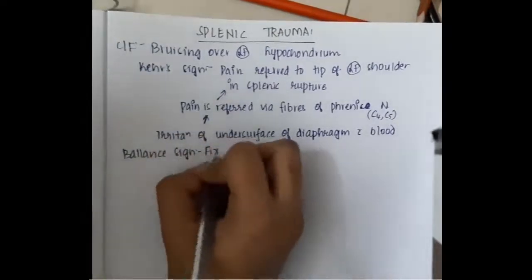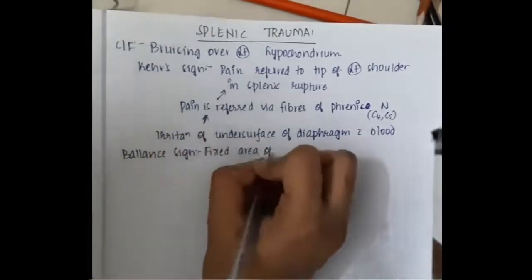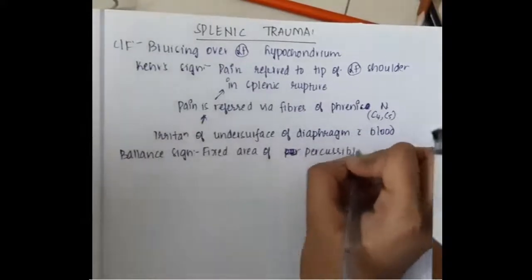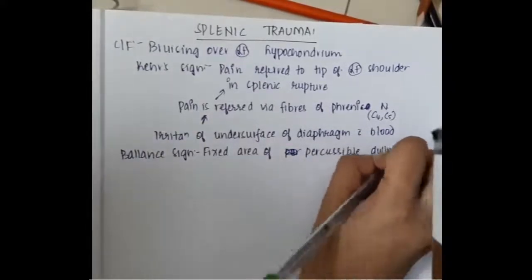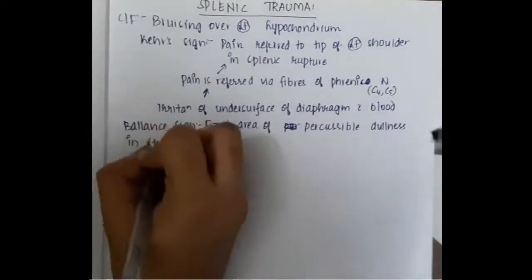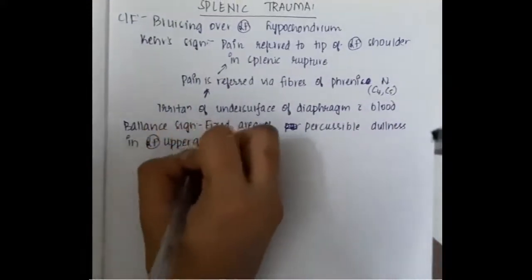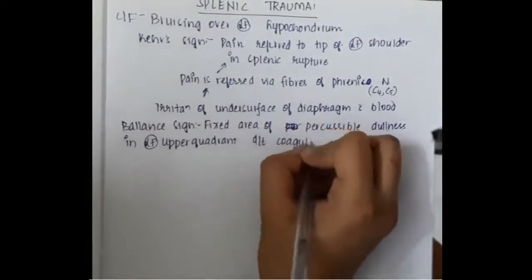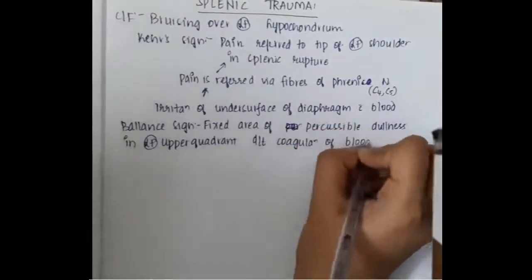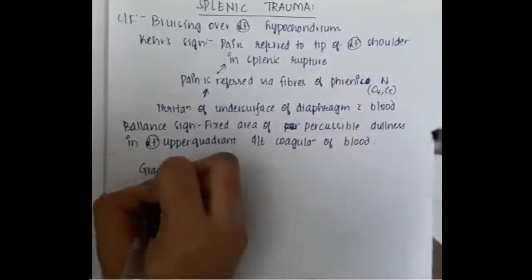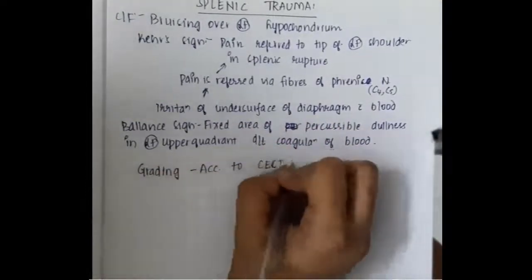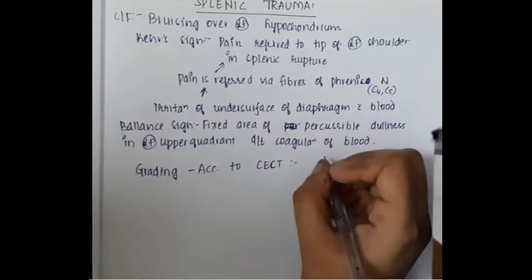We also have Balance sign, where there is a fixed area of percussable dullness in the left upper quadrant due to coagulation of blood.